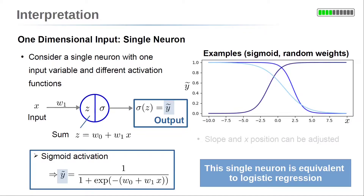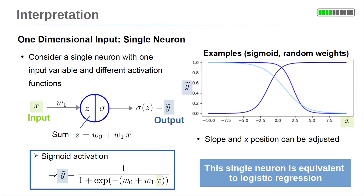This model is equivalent to logistic regression. On the right side, three examples of the function y tilde depending on x are plotted using different random values for w0 and w1. The result is an S-shaped curve; its x-position can be adjusted by parameter w0, and the slope of the transition from 0 to 1 is determined by w1.